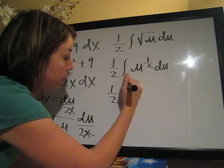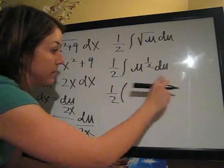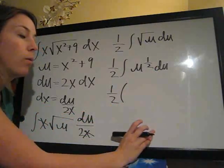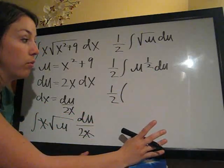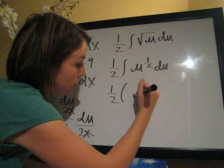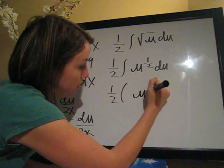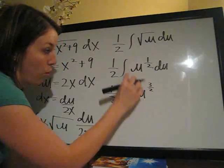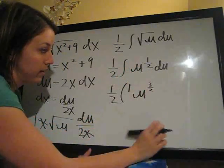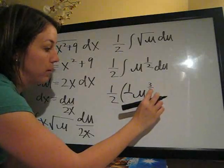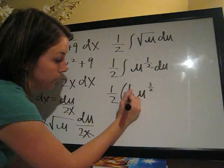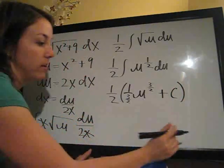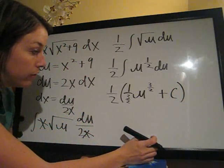1 half, we're going to go ahead and take the integral, open parenthesis, we're going to take the integral of this part now. Always add 1 to the exponent. 1 half plus 1 is 1 and 1 half, or 3 halves. So, u to the 3 halves. And then we divide the coefficient, which is 1, it's implied here, divide the coefficient by the new exponent. So, 1 over 3 halves. And then plus c, always, when we're taking the integral, to represent the constant.